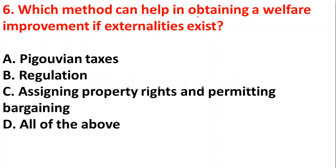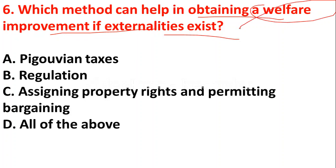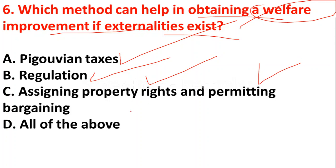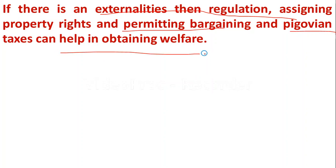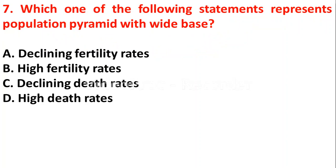Question 6: Which method can help in obtaining a welfare improvement if externalities exist? Option A - Pigouvian tax; option B - regulation; option C - assigning property rights and permitting bargaining; option D - all of the above. The correct answer is option D. In the case of externalities, Pigouvian taxes, regulation, and assigning property rights with permitting bargaining all help in obtaining welfare improvement.